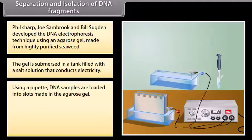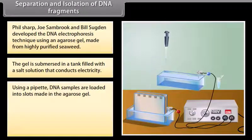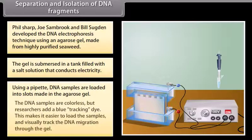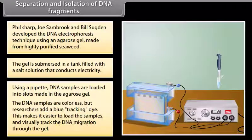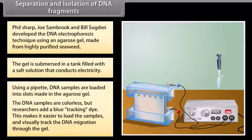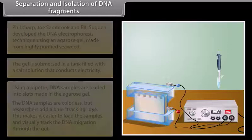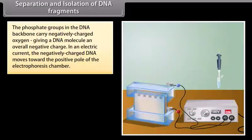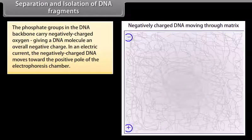The gel is submerged in a tank filled with a salt solution that conducts electricity. Using a pipette, DNA samples are loaded into slots made in the agarose gel. The DNA samples are colorless, but researchers add a blue tracking dye. This makes it easier to load the samples and visually track the DNA migration through the gel.